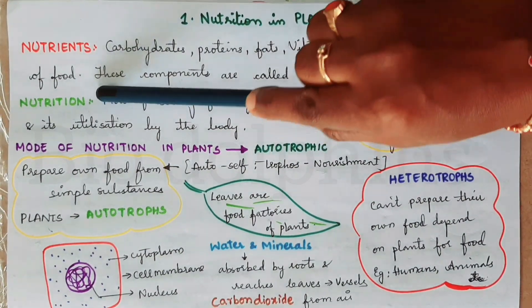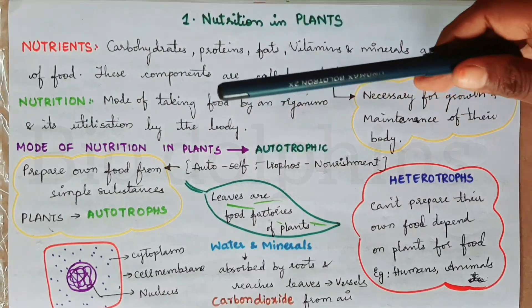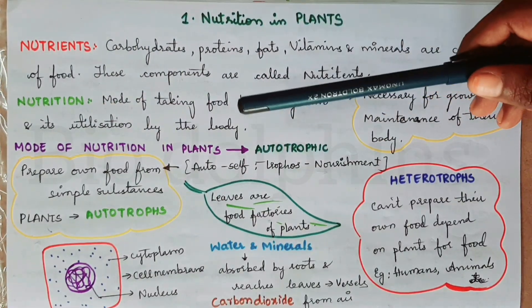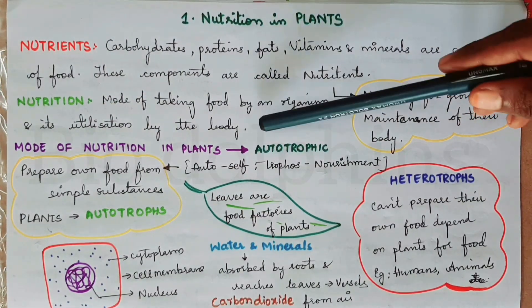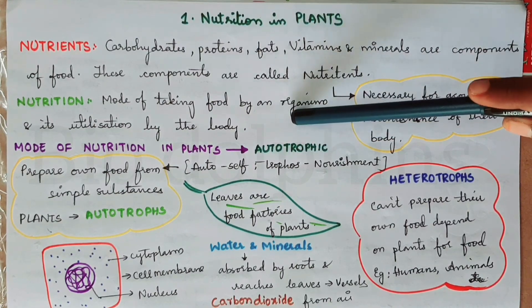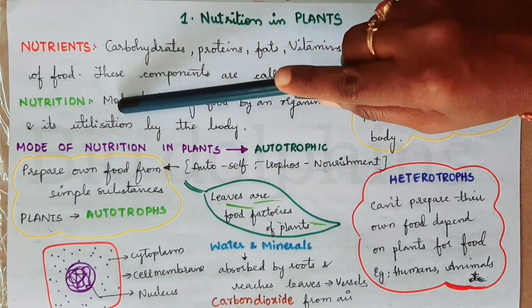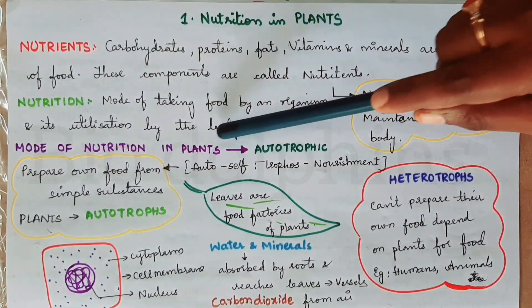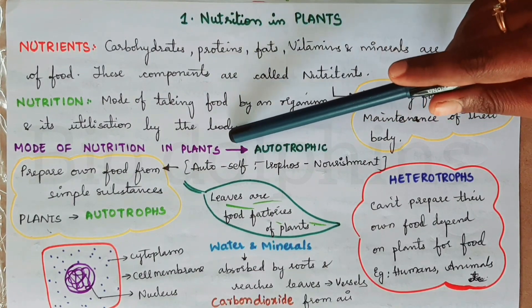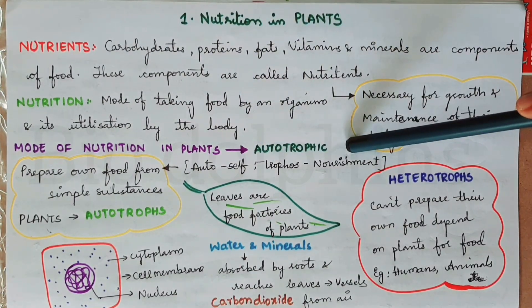Nutrition is nothing but the process of using nutrients. Plants use the Autotrophic mode of nutrition.